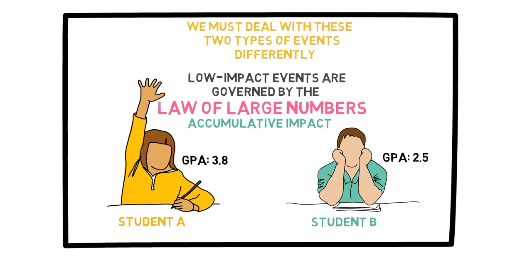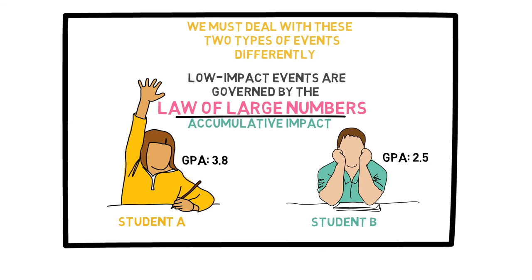The main point to take away from this video is this: low-impact decisions are governed by the law of large numbers, so we will take advantage of this when dealing with them. High-impact decisions and events are not dictated by the law of large numbers, so it is important to be even more aware of them and take a different mathematical and probabilistic approach. Both types of decisions are important, but they must be approached in different ways. We will discuss each category and examples of them in detail in the next videos.